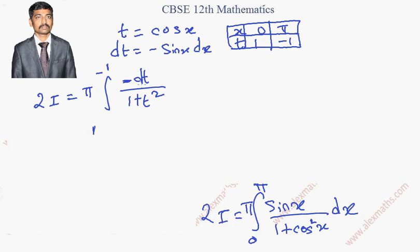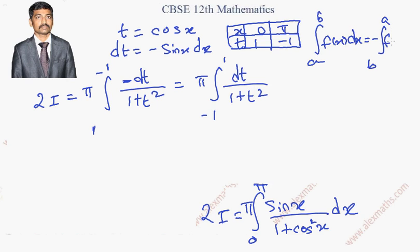We can take this minus sign out, and that will interchange the limit. That is another property. From minus 1 to 1, I can make this. And this is from integration of dt by 1 plus t square. There is a property where we have from a to b f of x dx. This can be changed into minus integral b to a f of x dx. So, I just used it.